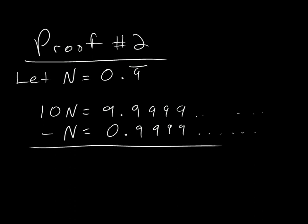So, 10n minus 1n. Well, that's 9n. And I'm going to subtract on this side. Well, 9 minus 0, that's 9. And 9 minus 9 is 0, 0, 0, 0.